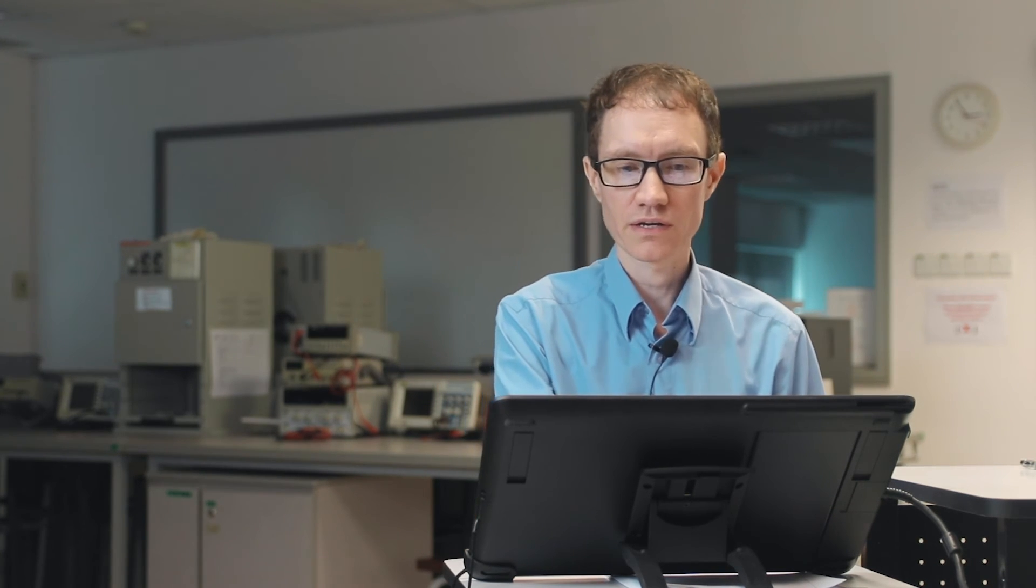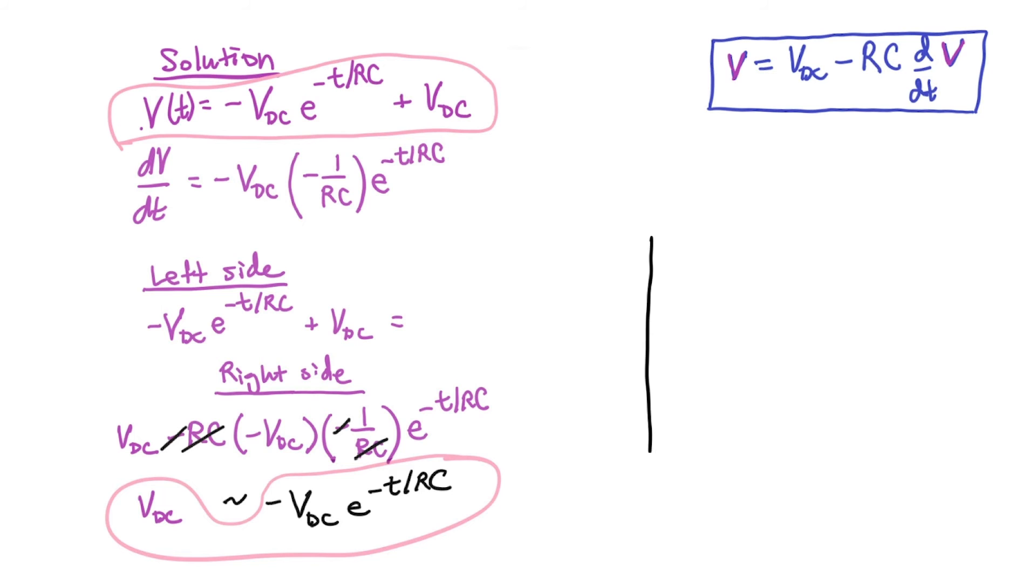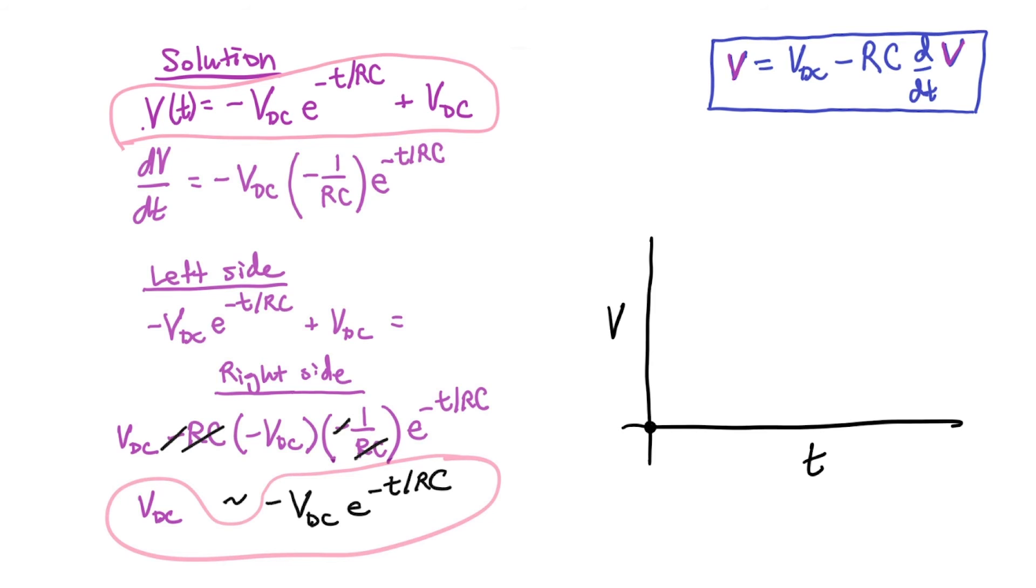So I've proven that this is the correct solution for our differential equation. Now, how does the solution actually look? Let's graph it. Let's graph time on the horizontal axis and the capacitor voltage here. So it makes sense that when the switch is first thrown that there won't be any voltage on the capacitor, because the capacitor is not charged. So we start off with some very low voltage. It should be zero.